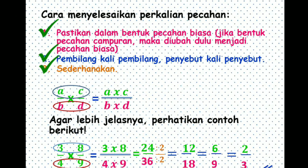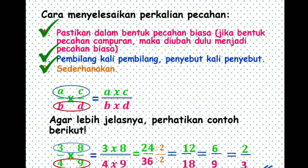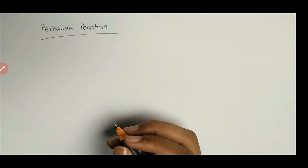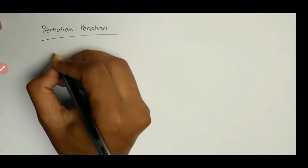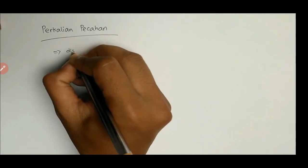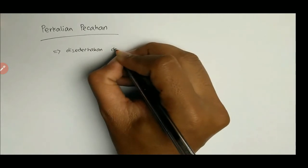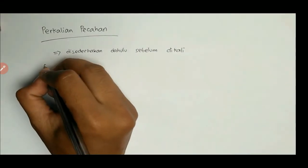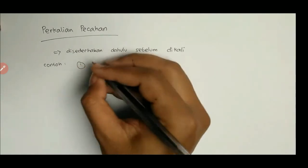Cara tadi adalah cara yang kalian pelajari di kelas 4 atau 5. Sekarang di kelas 6, Pak Imam akan menjelaskan cara atau trik yang lebih ringkas. Caranya: tidak langsung dikali pembilang kali pembilang, penyebut kali penyebut, tetapi jika bisa disederhanakan, disederhanakan terlebih dahulu sebelum dikalikan. Lebih mudahnya, perhatikan contoh soal berikut.